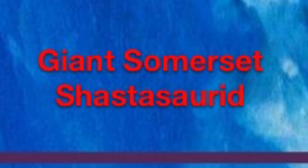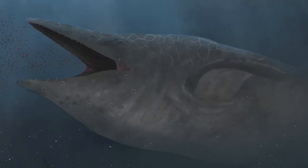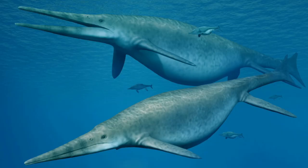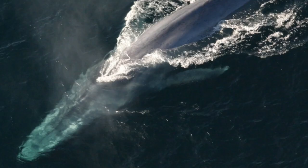Giant Somerset Shastasaurid. You probably know that the largest known marine reptile is a 21-meter ichthyosaur called Shastasaurus sikanniensis. But a jawbone was found in Somerset, England that might belong to an even bigger reptile. Around 205 million years old, the jaw was found in 2016 and later discovered to belong to a giant shastasaurid ichthyosaur in 2018. The owner of the jawbone probably dwarfed sikanniensis at a length of 26 meters. Some even say this huge reptile could dethrone the blue whale, although this is still a mystery.